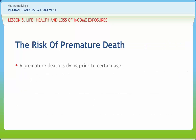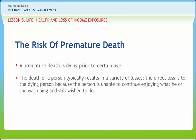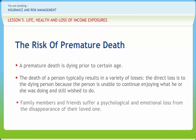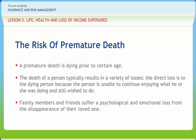A premature death is dying prior to a certain age. The death of a person typically results in a variety of losses. The direct loss is to the dying person, who is unable to continue enjoying what he or she was doing and still wished to do. Family members and friends suffer a psychological and emotional loss. However, the economic loss is chiefly felt by people who depended financially on the deceased — for example, a spouse, children, and parents — who lost the future income that would have been earned. Another common loss is that of a partnership that lost a key partner, endangering the continuation of the business.